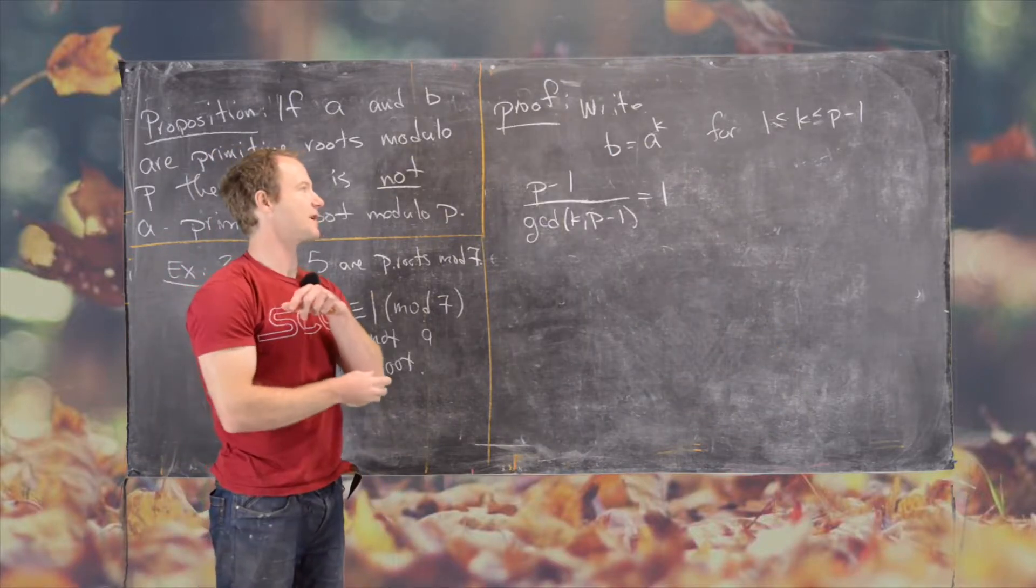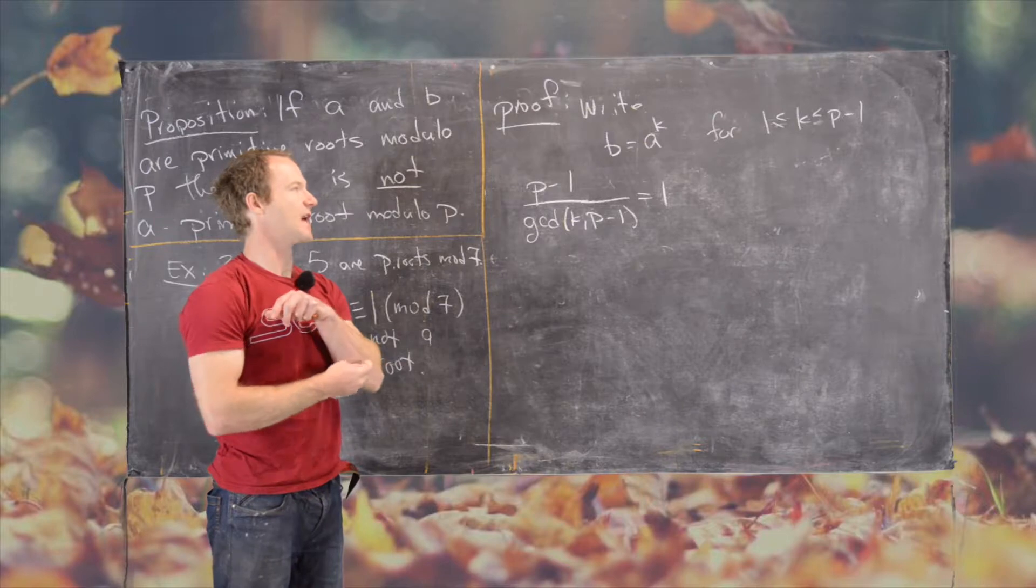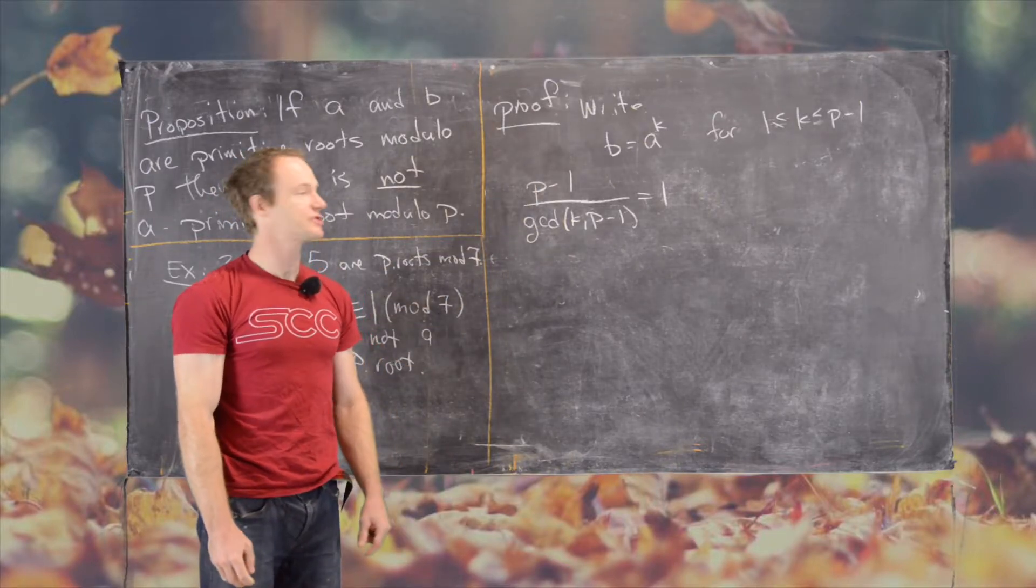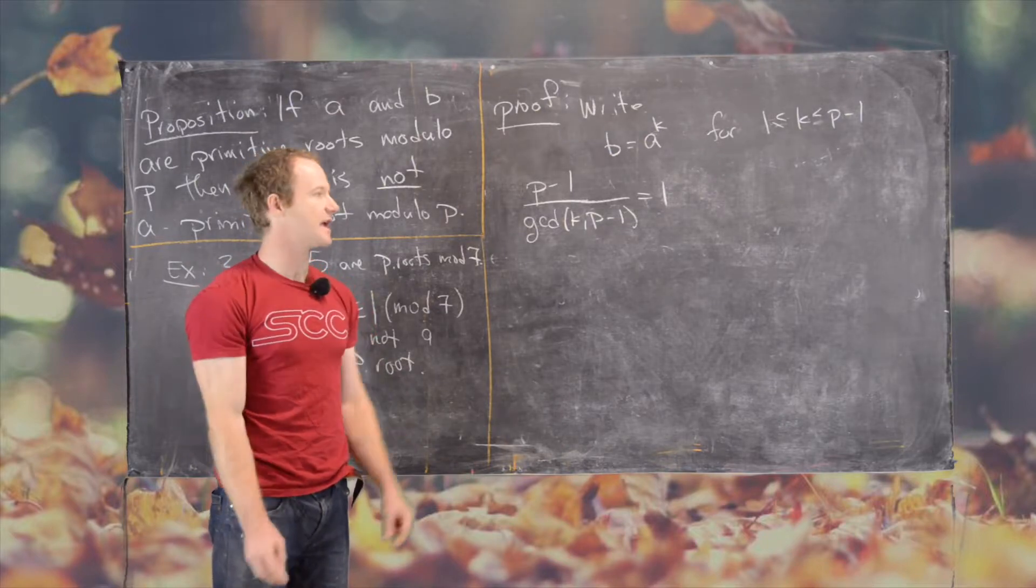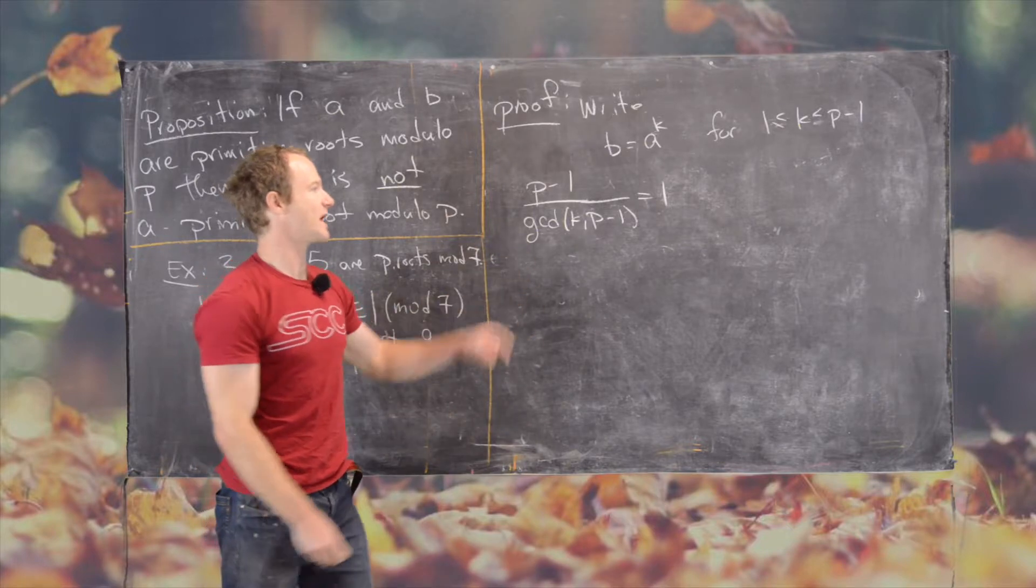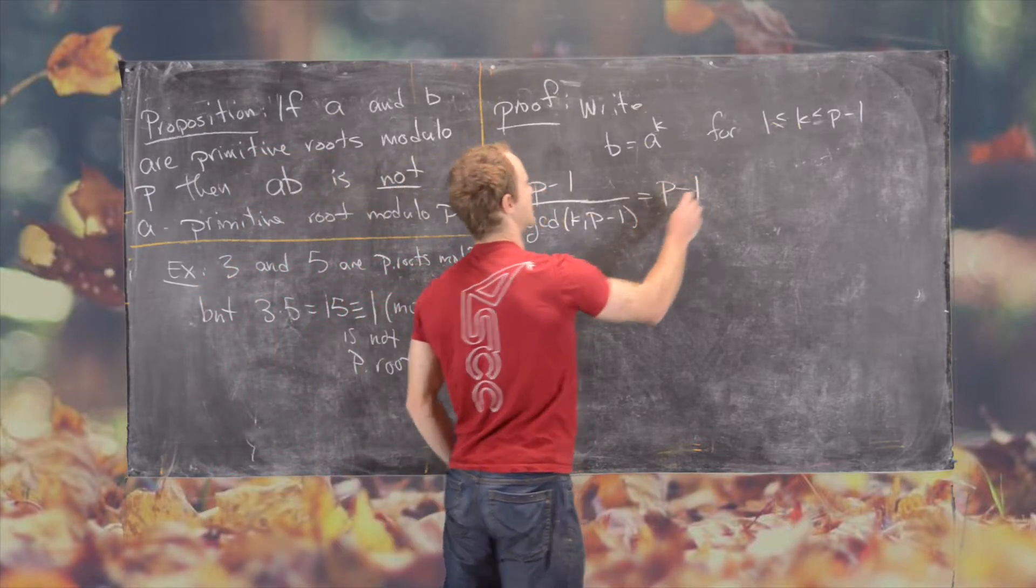So we ended at this point. So we know that if A and B are both primitive roots, and we write B in terms of A, then we can calculate the order of B two different ways, and that gives us the following equation.